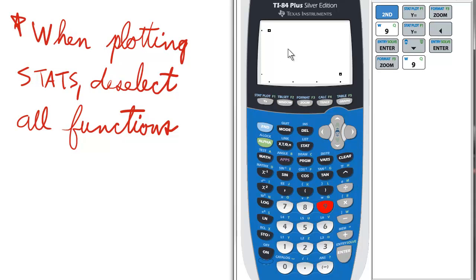And as my functions are deselected, I have it clean. And now I have only the boxes for my stat plot.